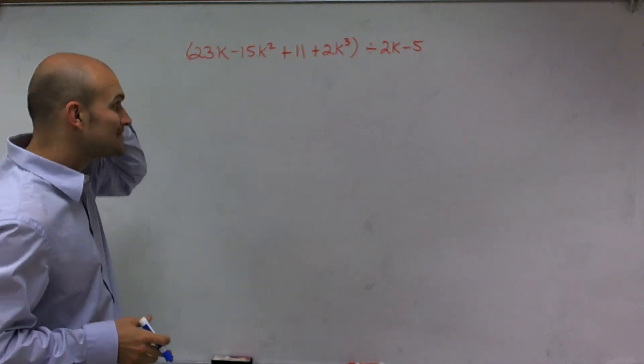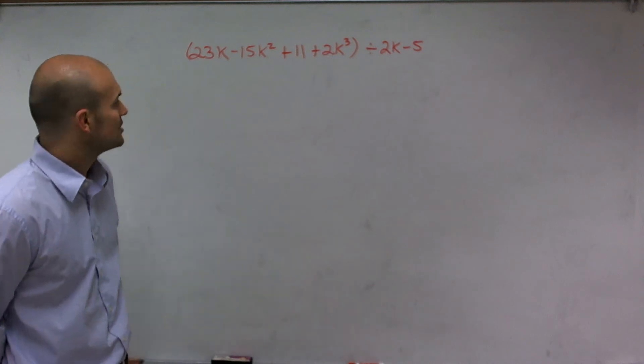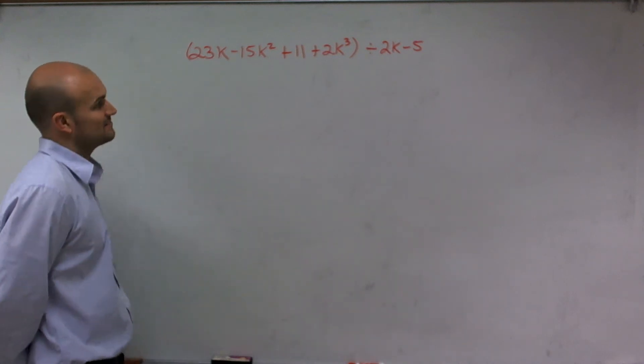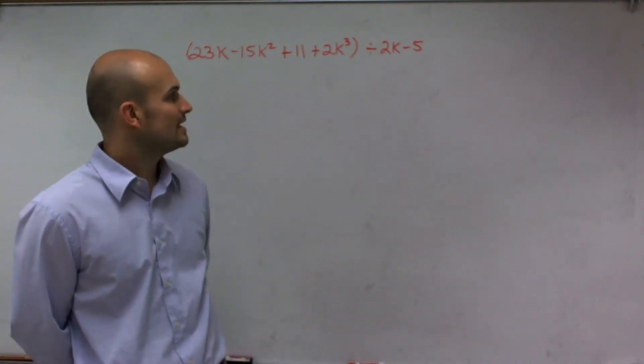Welcome. What I want to do today is show you how to divide this polynomial by the binomial. So the polynomial I have is 23k minus 15k squared plus 11 plus 2k cubed divided by 2k minus 5.